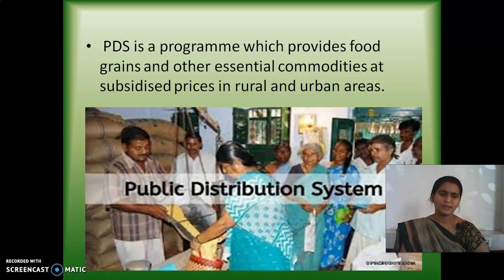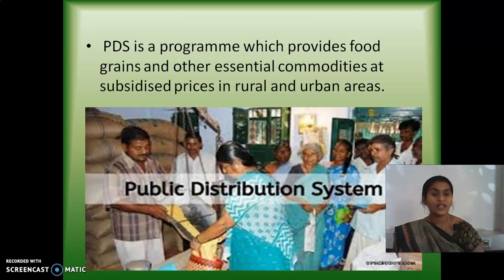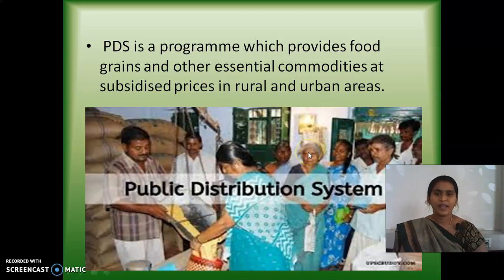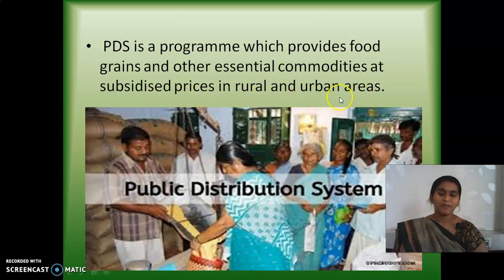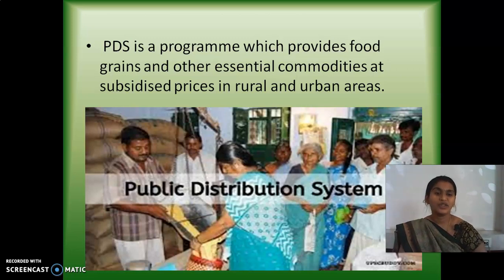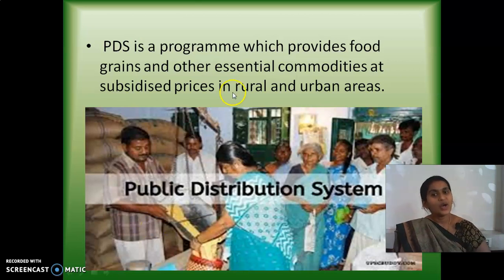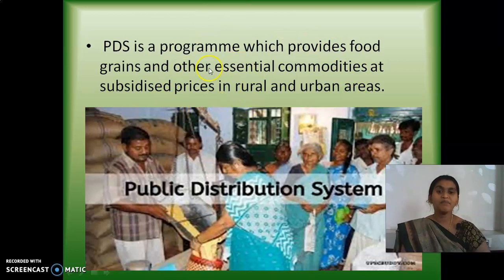What do you mean by the public distribution system? You can see in your surroundings — you will call it a ration shop. The public distribution system provides food grains and other essential commodities at subsidized prices in rural and urban areas. With minimum prices compared to outside shops, they provide food grains and other essential commodities to the people — even in rural and urban areas, for the poor people. That is called the public distribution system.